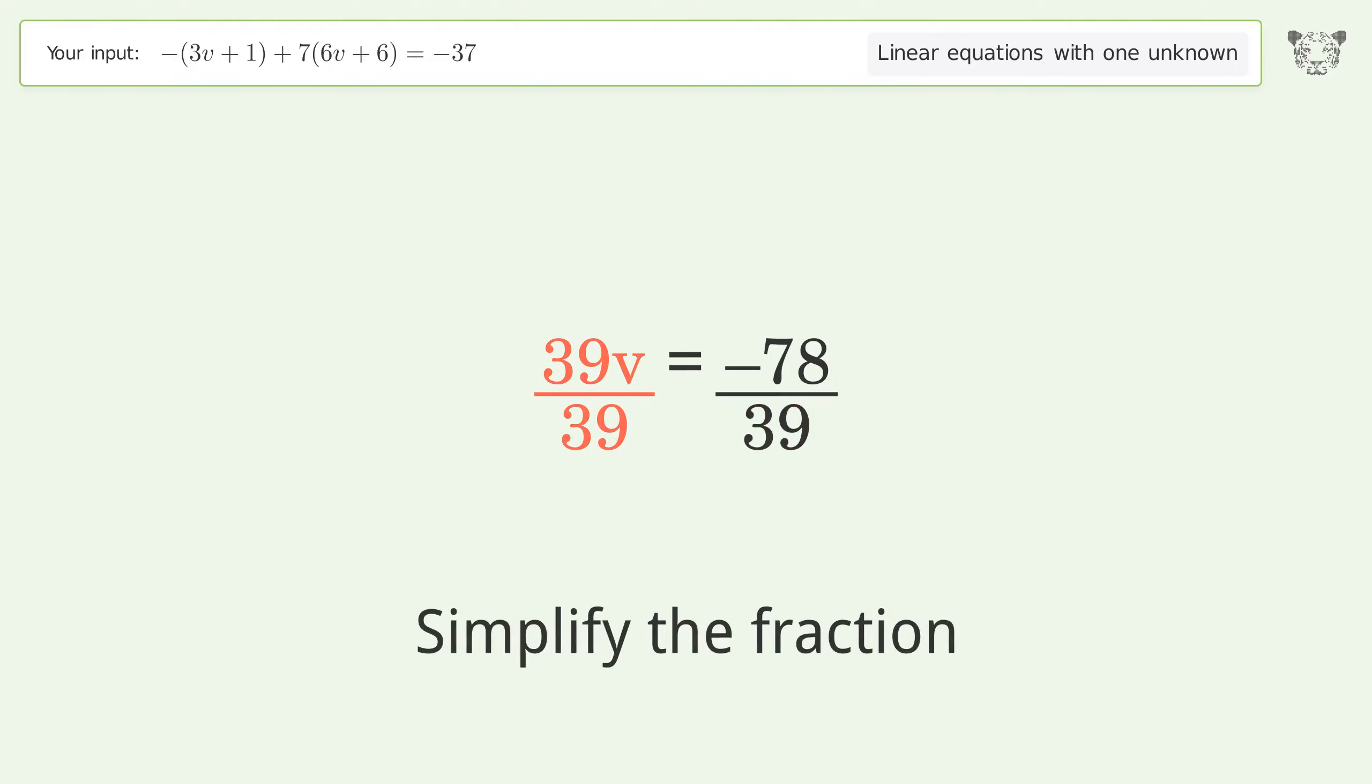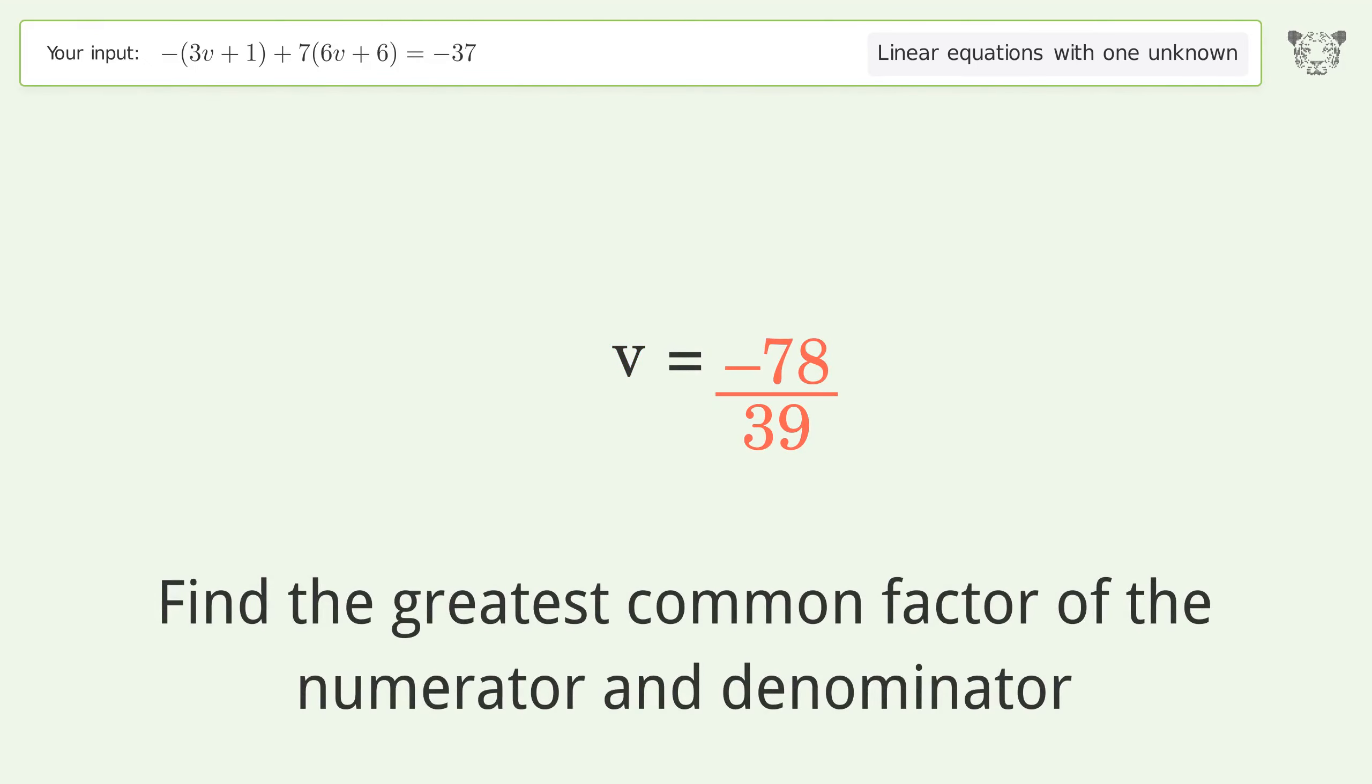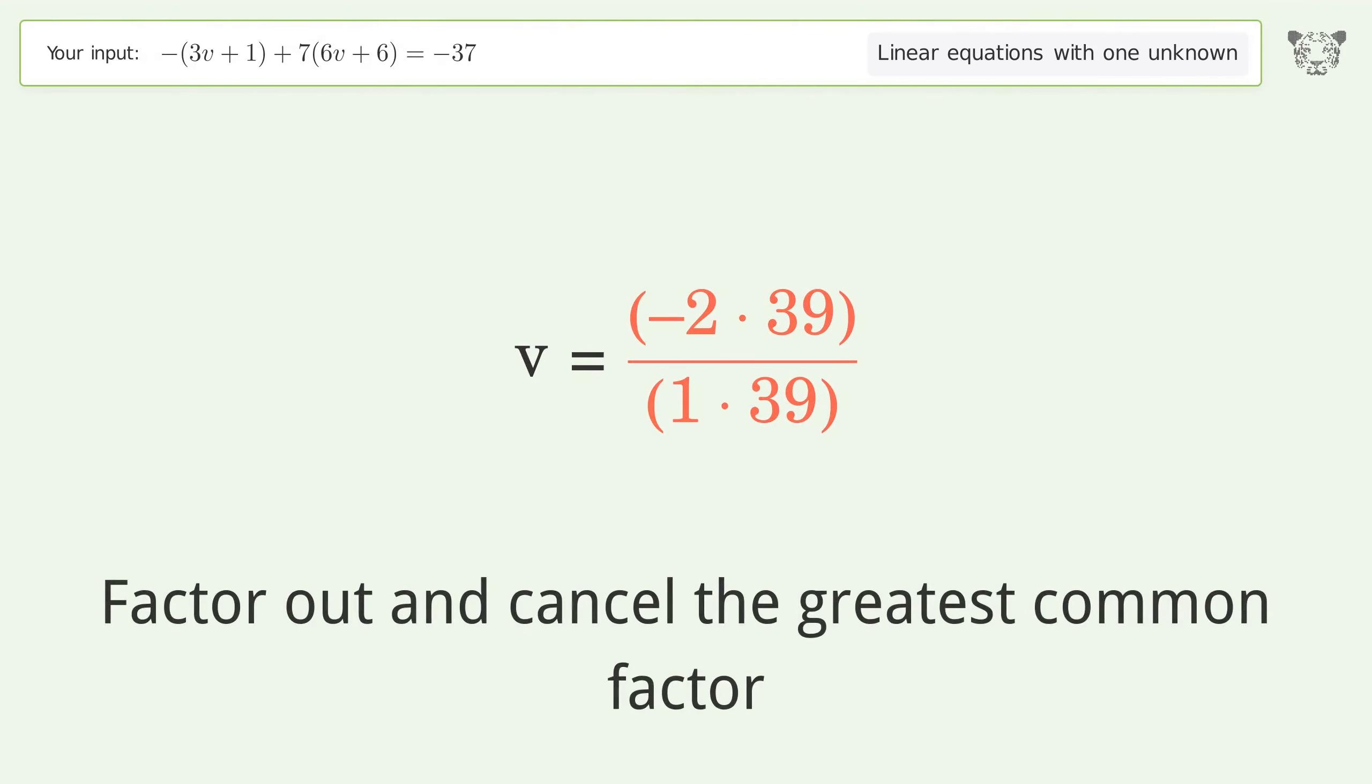Simplify the fraction. Find the greatest common factor of the numerator and denominator, then factor out and cancel the greatest common factor.